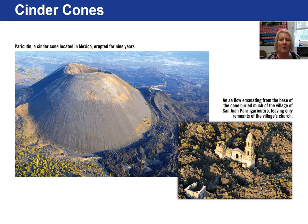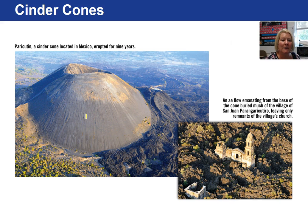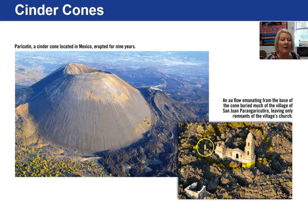Here is Paracutin, the cinder cone located near Mexico City, with an eruption history that lasted nine years. In this picture you can see an entire town covered by lava, with just the remnants of the church remaining.